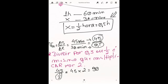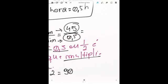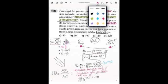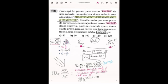Está certo? Então, dividir por 0,5 é o mesmo que multiplicar por 2. Então, a resposta da nossa questão é 90 quilômetros por hora. Letra B de bola.